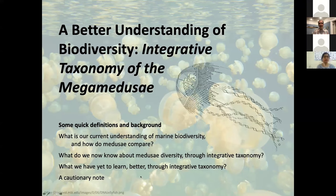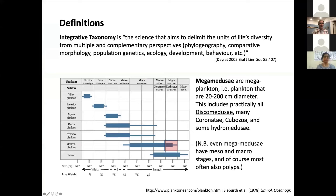So on to the definitions. Integrative taxonomy, as defined by Benoit Desrat in 2005, is the science that aims to delimit the units of life's diversity from multiple and complementary perspectives. This can include things such as phylogeography, comparative morphology, population genetics, ecology, development, behavior, and so on.